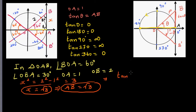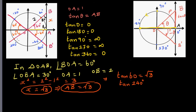So tan(60°) = √3. And tan(240°) would also be √3, because when the particle has moved 240 degrees, you join that point with the tangent and the length of AB is the same. I'll show this on the calculator.